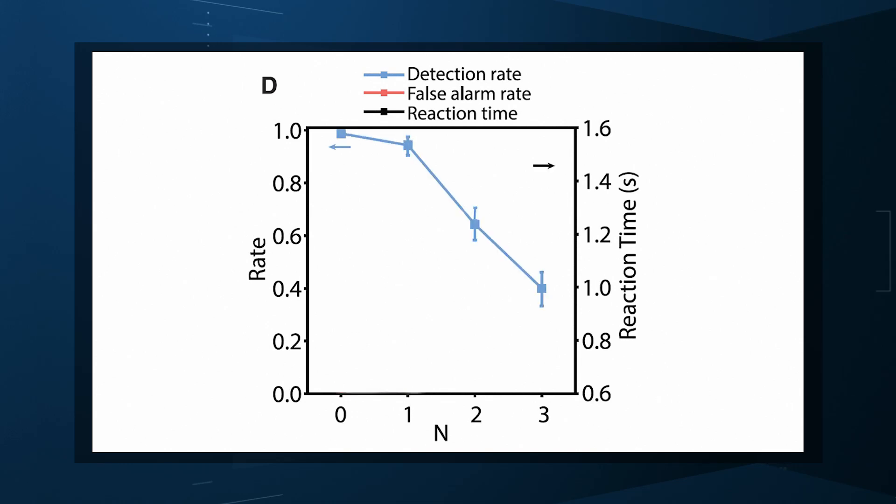At higher N, the detection rate, the rate at which matches were appropriately clicked, declined. The reaction time increased. False alarms went up. All hallmarks of cognitive stress. And the e-tattoo could tell.